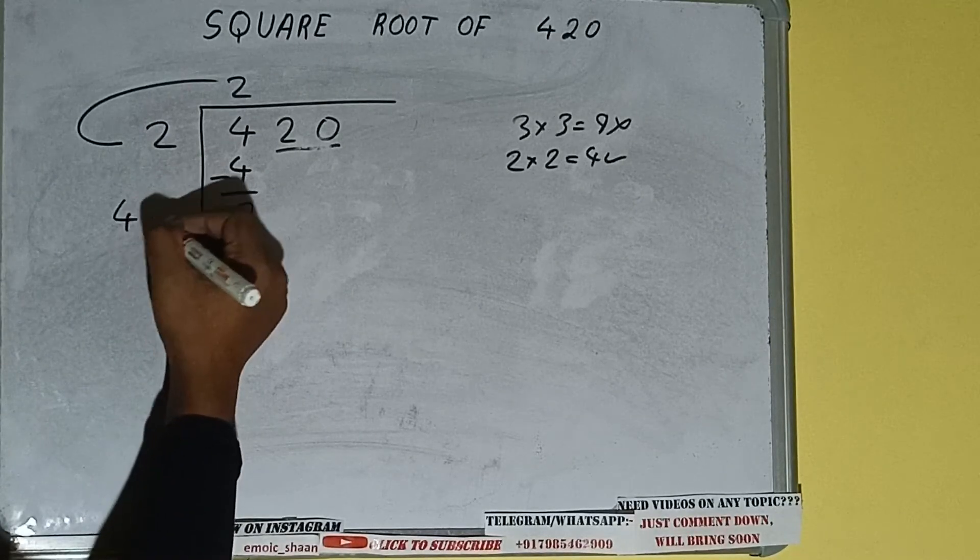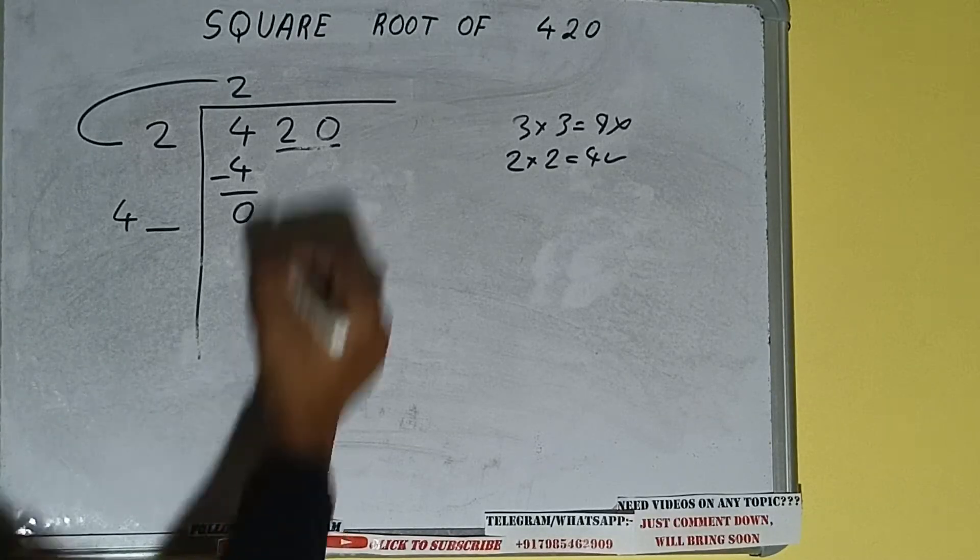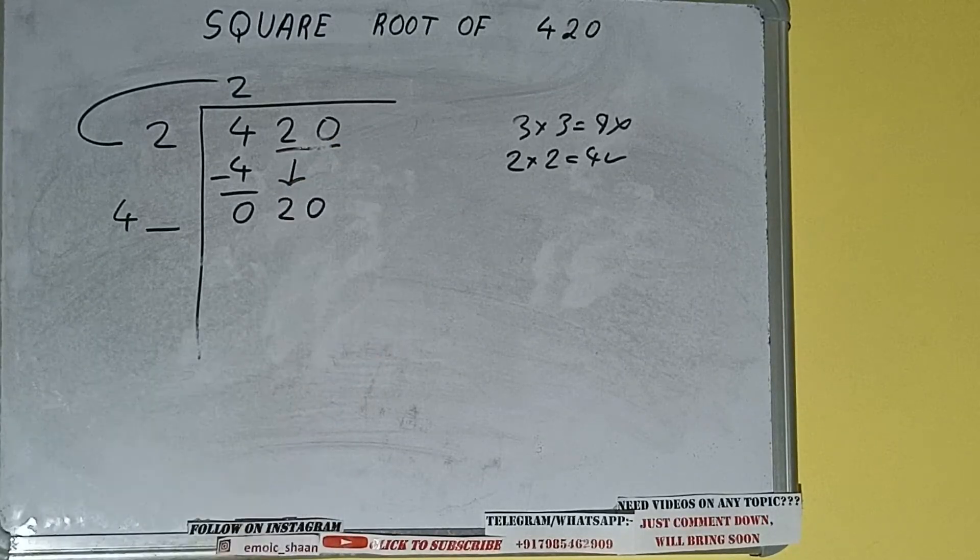Write it here and keep one digit extra. And this number we need to make it big, so bring the next pair down and it will be 20.